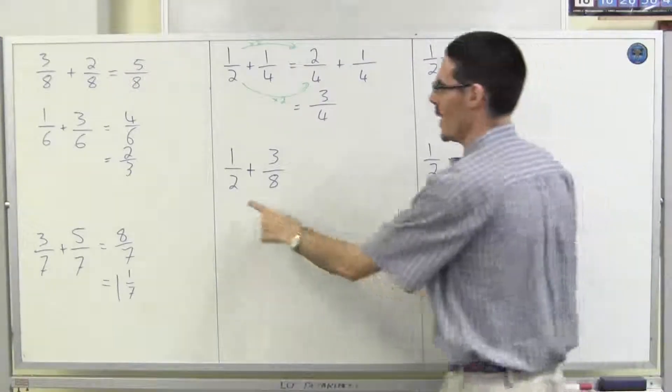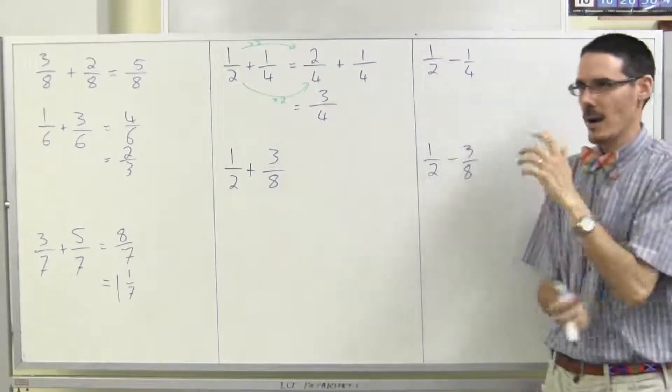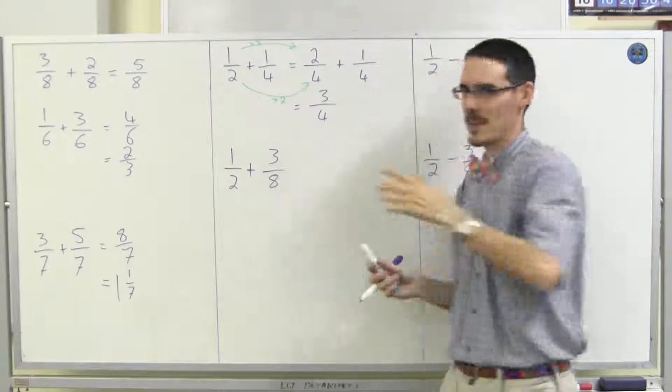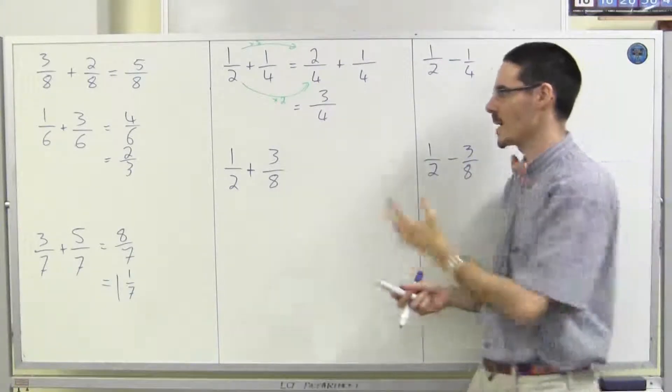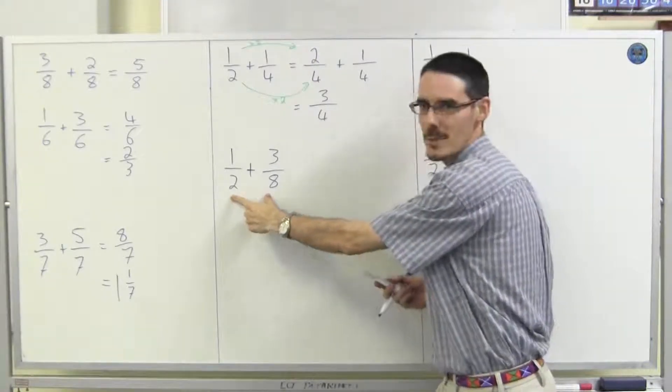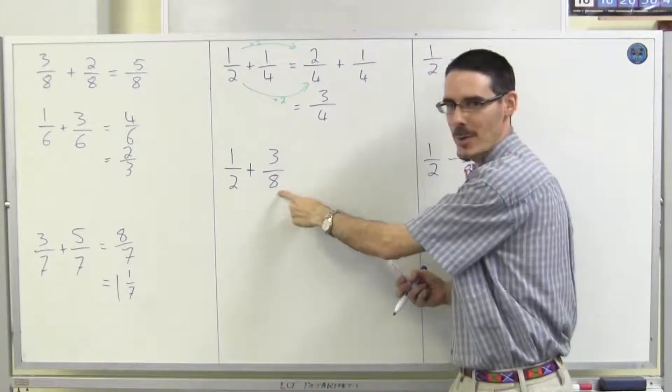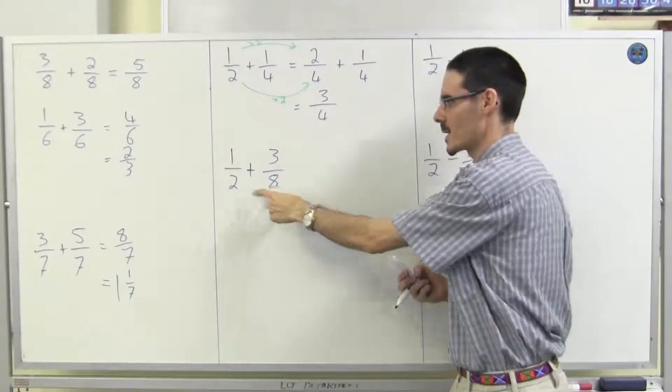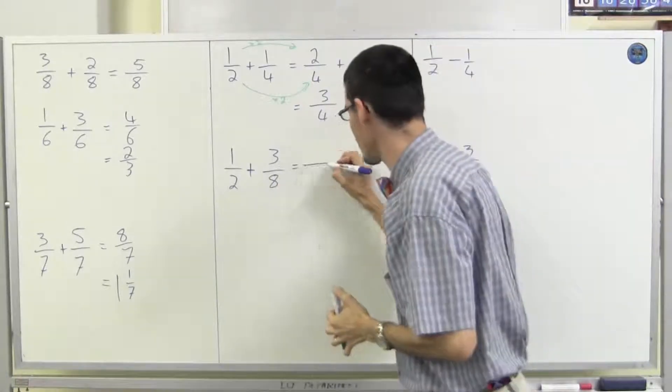Similar one. A half plus three eighths. Okay, I need to write both of these fractions with the same denominator. What number is going to work? I need the lowest common denominator, the smallest number that both of these will divide into. Again, I suggest start with the bigger number and go up in multiples. Does two go into eight? Yes. So, eighths is what I'm going to use.